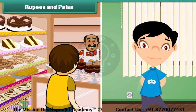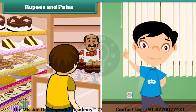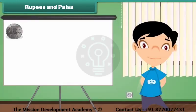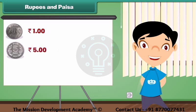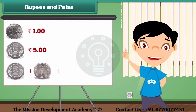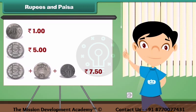When we go to the market, sometimes the shopkeeper tells the amount in rupees and paise both. Let me show the correct way to write the price told by a shopkeeper. 1 rupee is written as Rupee 1. 5 rupees is written as Rupees 5. 7 rupees and 50 paise is written as Rupees 7.50.